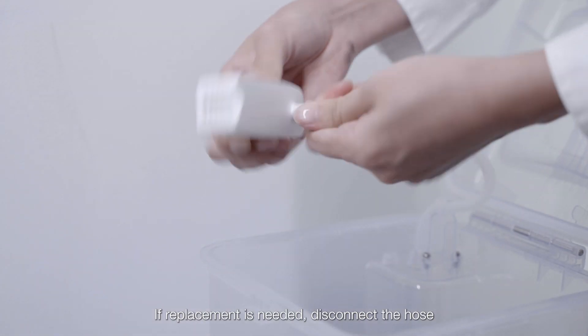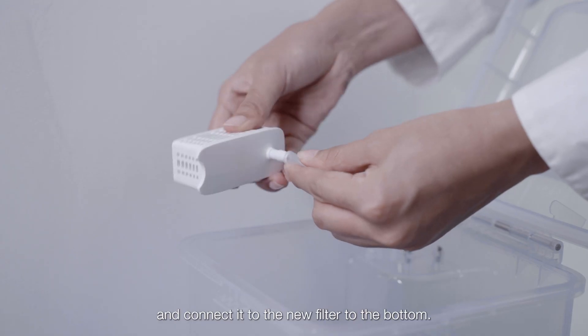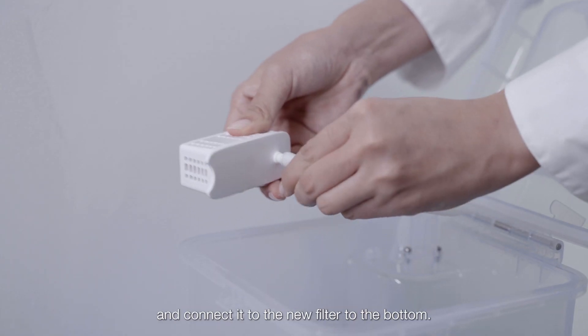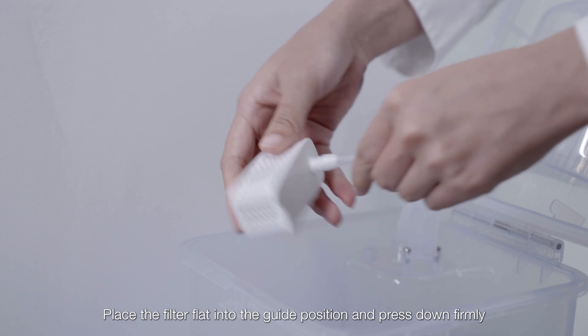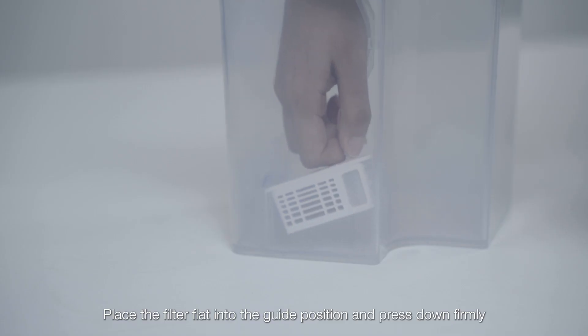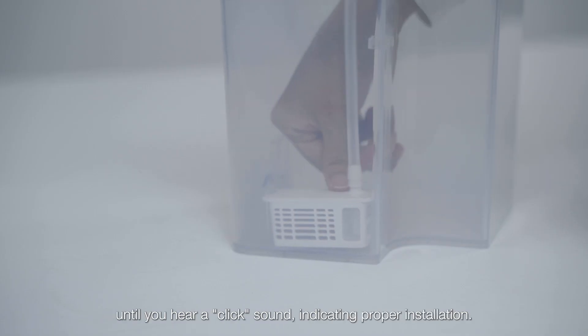If replacement is needed, disconnect the hose and connect it to the new filter to the bottom. Place the filter flat into the guide position and press down firmly until you hear a click sound indicating proper installation.